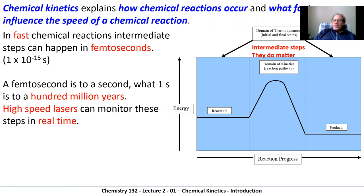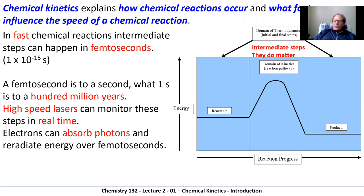We can do this because of the advent of high-speed lasers, which irradiate a chemical mixture with energy, and electrons can absorb those bursts of energy and re-radiate them in characteristic quantities, which can be used to identify specific intermediates within a reaction mixture.